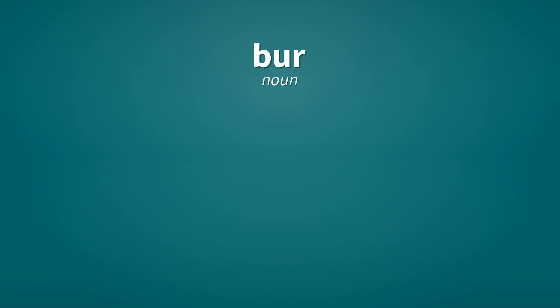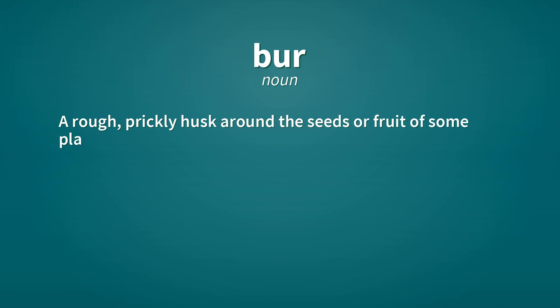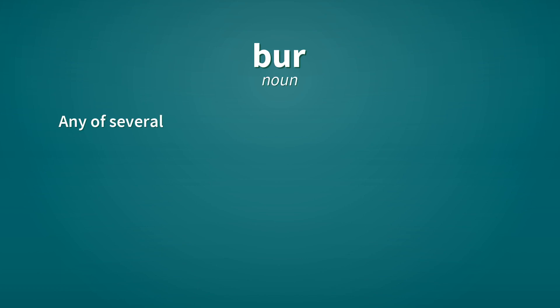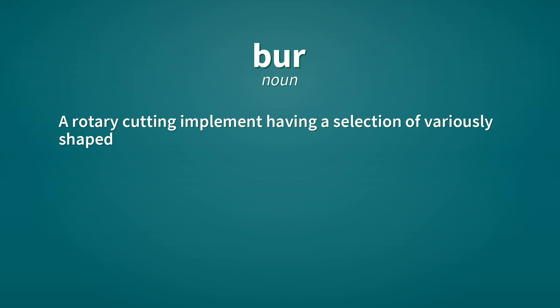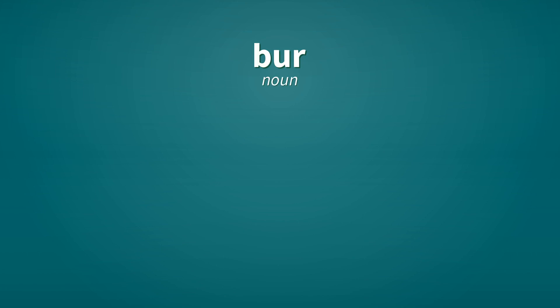Burr. Noun: a rough prickly husk around the seeds or fruit of some plants. Noun: any of several plants having such husks. Noun: a rotary cutting implement having a selection of variously shaped heads. Noun: alternative form of burr.